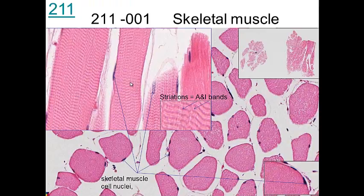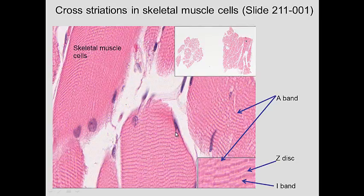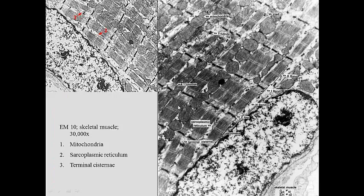Looking at another view, we can see the striations very clearly with nuclei on the periphery. At higher magnification, you can see not only the A band (dark) and I band (light), but also the Z-disc. From one Z-disc to another is one sarcomere, with repeating units along the muscle. An electron microscopic view shows a nucleus on the periphery and the sarcomere from Z-line to Z-line. The H band is a lighter area where there is no overlap between actin and myosin.